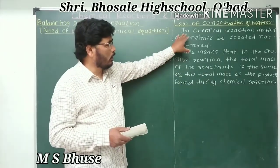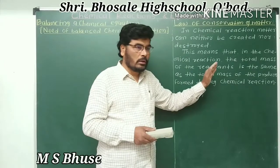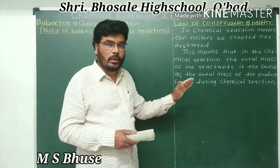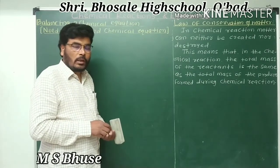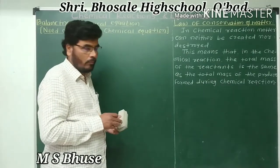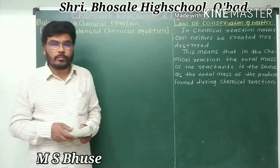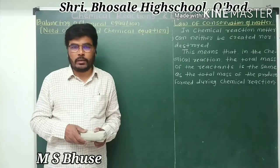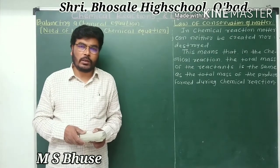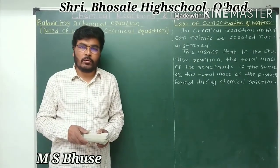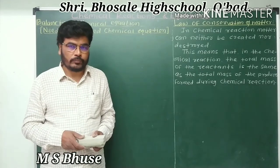In a chemical reaction, matter can neither be created nor destroyed. The total mass of the reactants is equal to the total mass of the products formed during the chemical reaction. Now we take the example of the reaction between an aqueous solution of silver nitrate and an aqueous solution of sodium chloride. When aqueous silver nitrate reacts with aqueous sodium chloride, a white precipitate of silver chloride and an aqueous solution of sodium nitrate are formed.